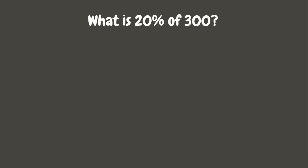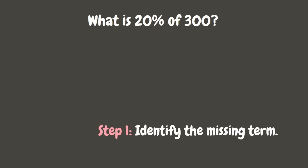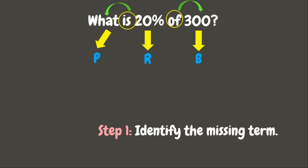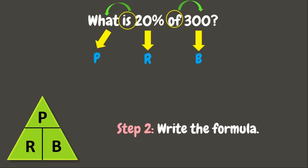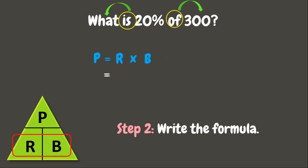Let's try our first example. What is 20% of 300? The first thing that we need to do is to identify the missing term. If the value has a percent sign, that is the rate. And the number which comes after the word 'of' is the base. That means the missing term is the percentage, which is beside the word 'is'. Now let us write the formula using our triangle. To get percentage, we will multiply rate to the base: P equals R times B. 20% times 300.